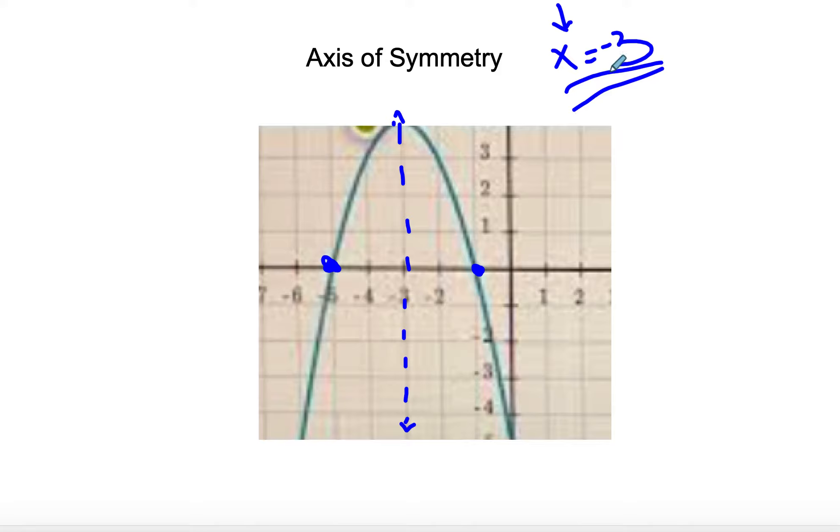Now, if you didn't have a graph, the way that you would do it is you would say negative 5 plus negative 1 divided by 2. It's the average. Okay, so negative 5 plus negative 1 is going to give you negative 6 divided by 2, sorry. And then that's going to give you negative 3, but again, don't forget to put the x equals in front of it.